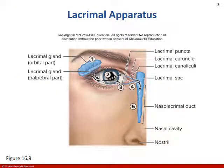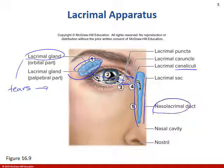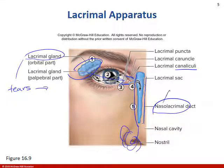Another protective structure is called the lacrimal apparatus. The lacrimal gland is going to produce tears that wash over the eye, and they have antimicrobial properties — lysosomes. They're going to get funneled through these canaliculi and eventually merge with the nasolacrimal duct. This is why someone crying a lot gets bubbles from their nose, especially in little children — the lacrimal gland is connected to the nasal cavity.